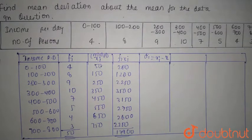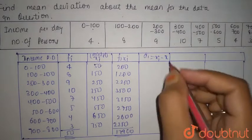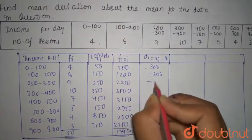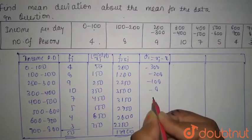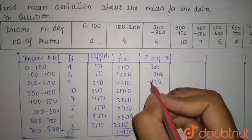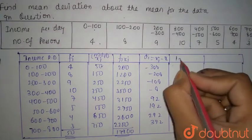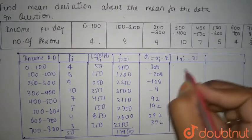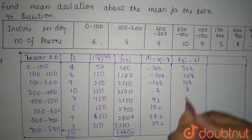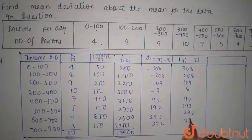It comes out to be -308, -208, -108, -8, 92, 192, 292, and 392. We are going to take the mod, |xi - x̄|, so all negatives will be positive: 308, 208, 108, 8, 92, 192, 292, and 392.